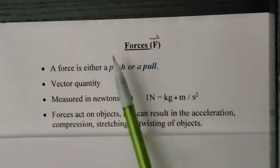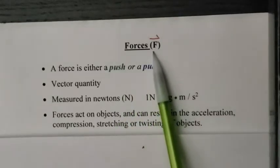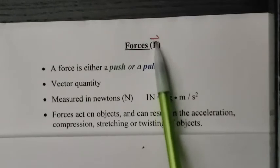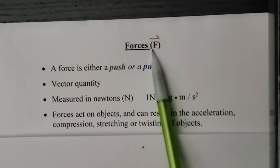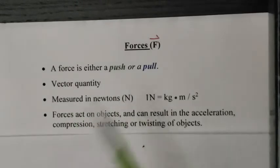Our new unit is called forces. The symbol for force is capital F. Now what we see is this little arrow above the F, which means we know it's a vector. Direction is important to us.